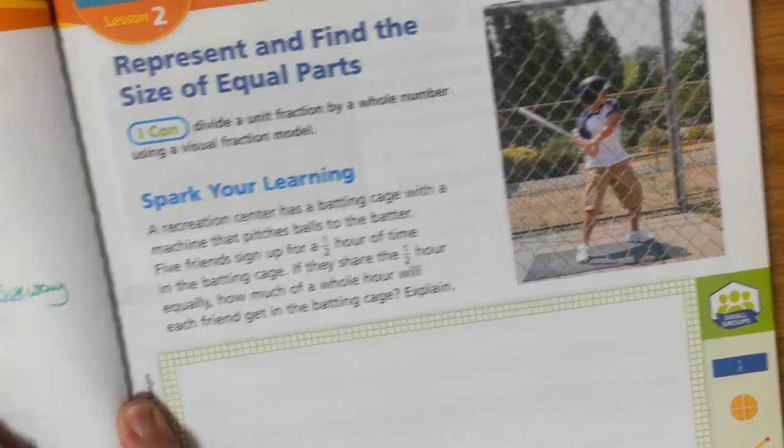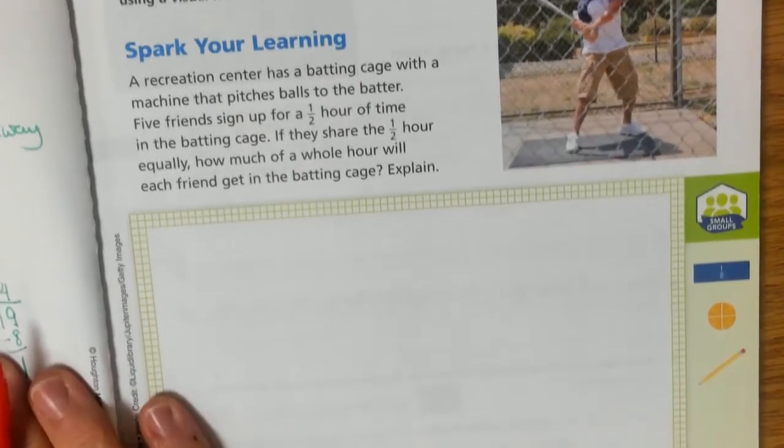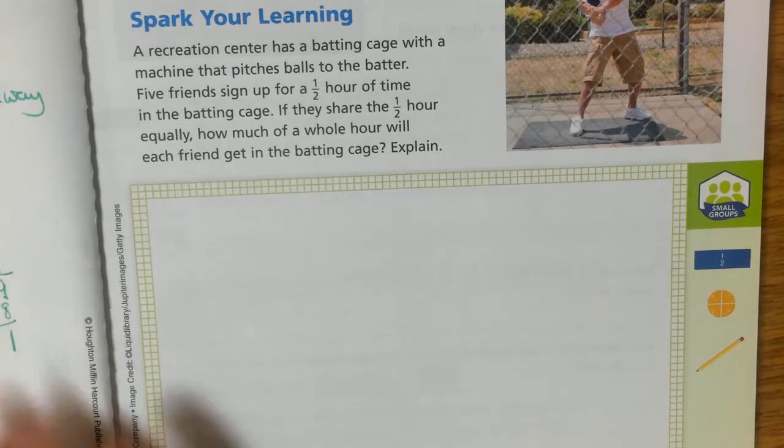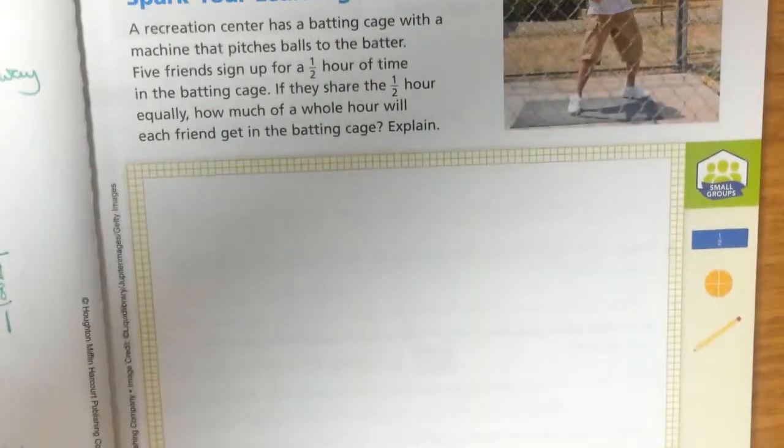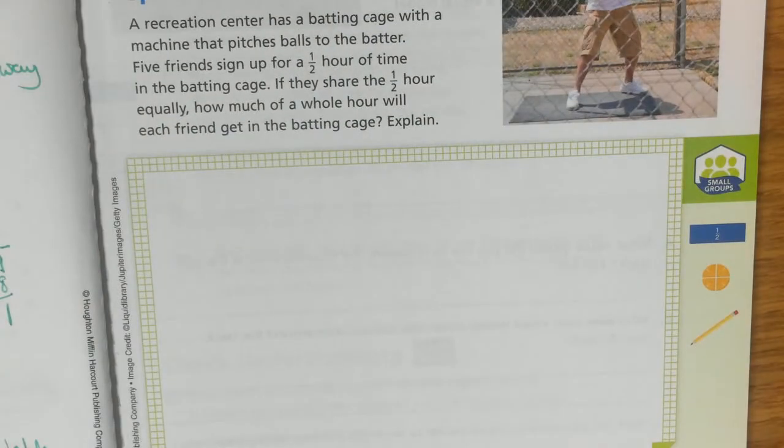You'll be able to divide a unit fraction by a whole number using a visual fraction model. A recreation center has a batting cage with a machine that pitches balls to the batter. Five friends sign up for a half hour of time in the batting cage. If they share the half hour equally, how much of a whole hour will each friend get in the batting cage?